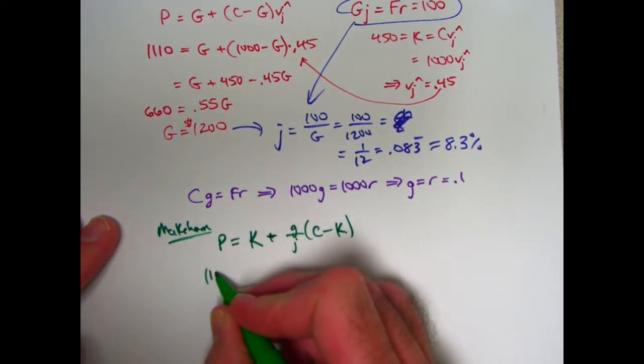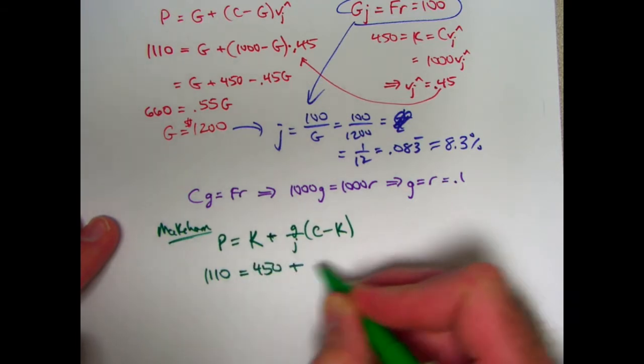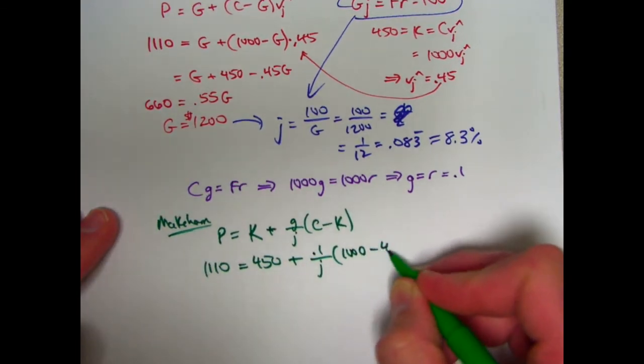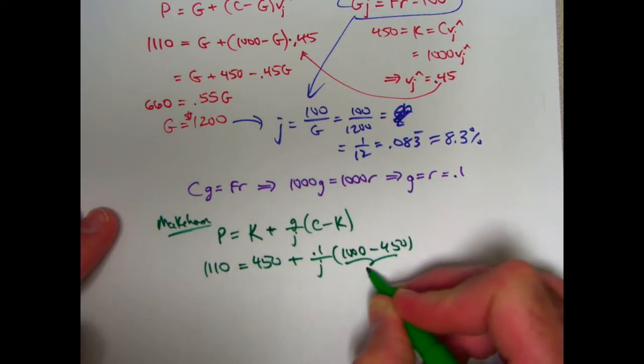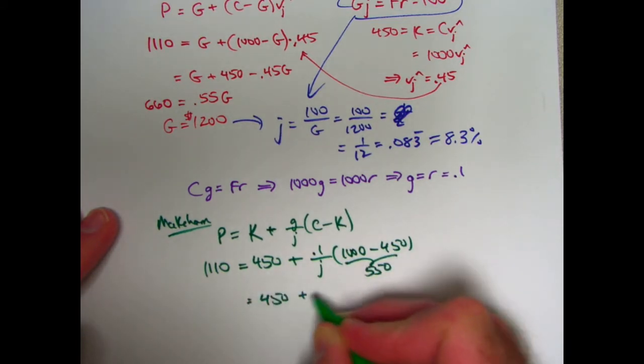Plug things in. P is 1,110. K was 450. Little g is 0.1. C is 1,000. And K again is 450. That's 550. So this becomes 450 plus 55 over j.